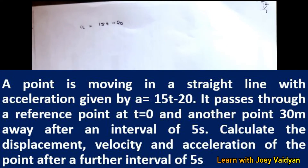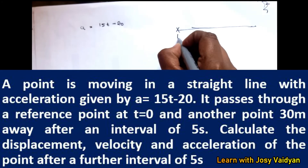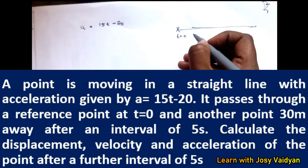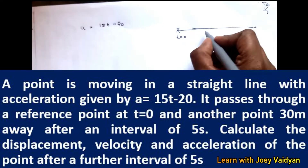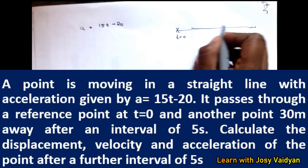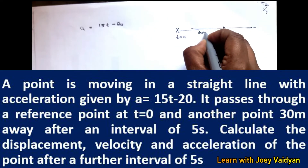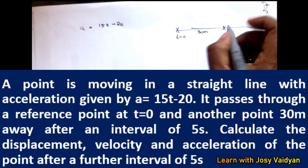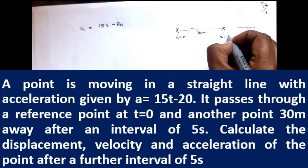At t equal to 0, the point is passing through the reference point, and at t equal to 5 seconds, the distance is 30 meters. We need to find the displacement, velocity, and acceleration at t equal to 10 seconds.